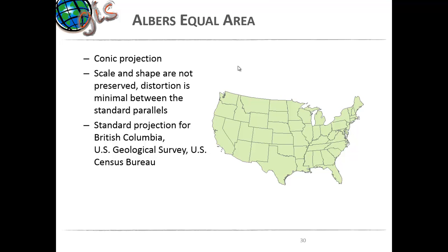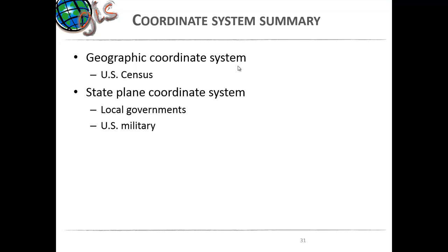Albers equal area is a conic projection used frequently because distortion is minimal between standard parallels. It's pretty good for entire US maps because the areas look more representative of the actual sizes of states. However, scale and shape are not as well preserved. Each projection serves a particular purpose — it's not one size fits all. It depends on the type of map you're creating, the type of information, and whether it's small scale or large scale.